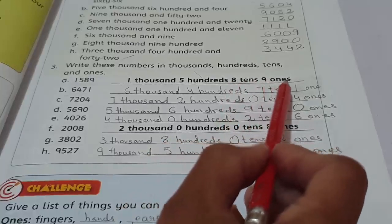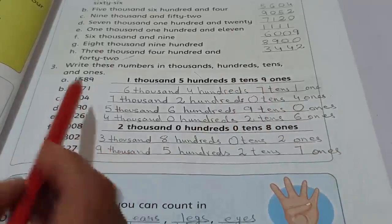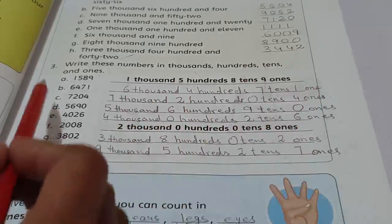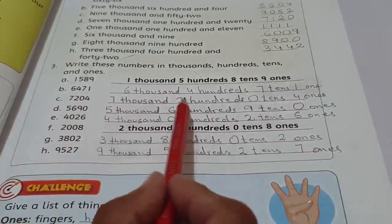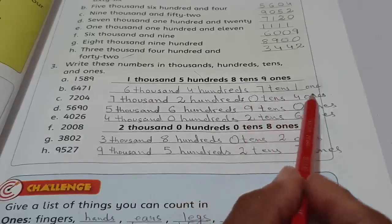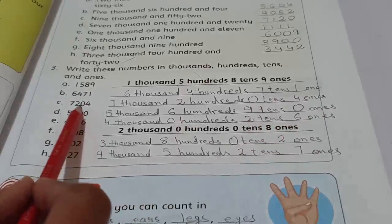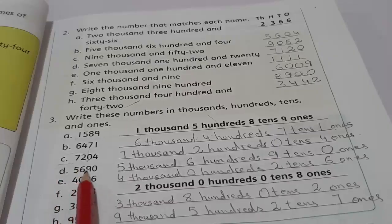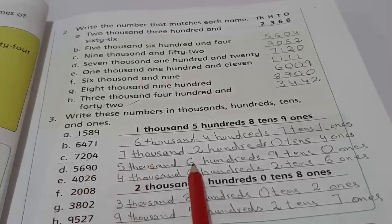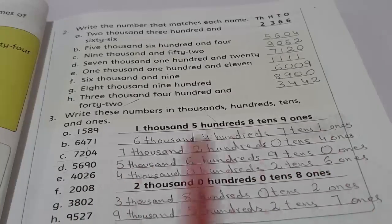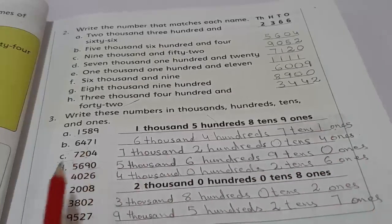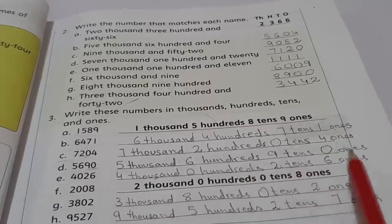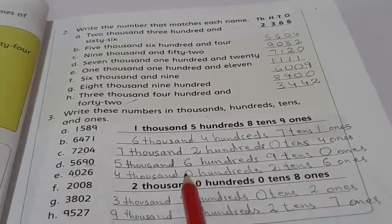1589 - one represents the thousands, five represents hundreds, eight represents tens, and nine shows the ones value. Similarly, 6471 is six thousand, four hundred, seven tens, one one. 7204 is seven thousand, two hundred, zero tens, four ones. There is no number in the place value of tens, so we will write zero tens.